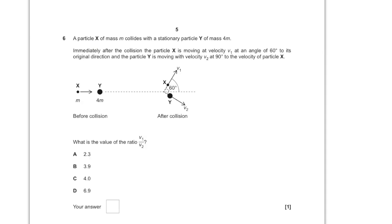For question number six, we have a particle X of mass m colliding with a stationary particle Y of mass 4m. Immediately after the collision, particle X is moving at velocity v1 at an angle of 60 degrees to its original direction, and particle Y is moving with velocity v2 at 90 degrees to the velocity of particle X. We need to find the ratio v1 over v2, using conservation of momentum in two directions. I'll resolve the momentum in the horizontal and vertical directions.